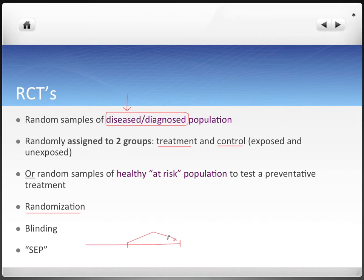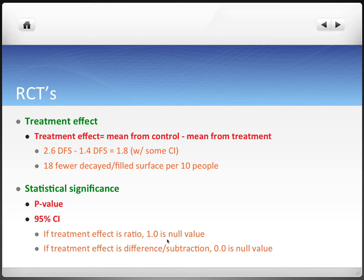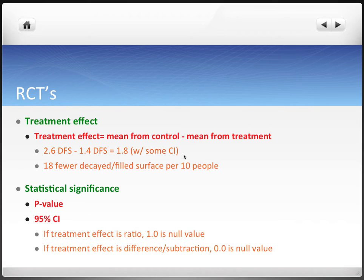The problem with SCP is that it can give a false alarm or false hope because we never reached that clinical endpoint. But it saves money and avoids ethical problems. RCTs measure treatment effect by subtracting or dividing values from the control relative to the treatment. It'll be reported as some number with a confidence interval — for example, 18 fewer decayed and filled surfaces per 10 people. That's clinically meaningful and is an example of treatment effect.